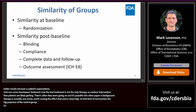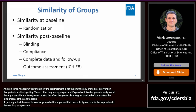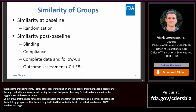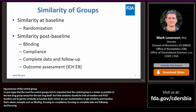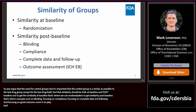It's important that the control group is as similar as possible to the test drug group, except for the test drug itself. That similarity should be both at baseline and post-baseline. To get similarity at baseline, that's where we use randomization. To get similarity post-baseline, that's where concepts such as blinding, focusing on compliance, focusing on complete data and follow-up, and focusing on good outcome assessment come into play.